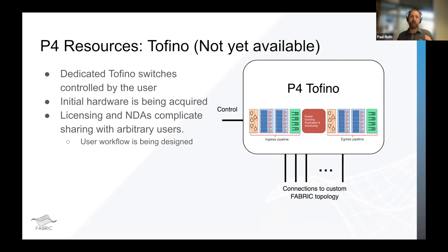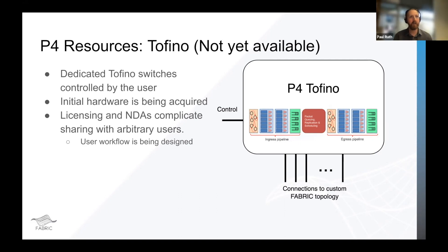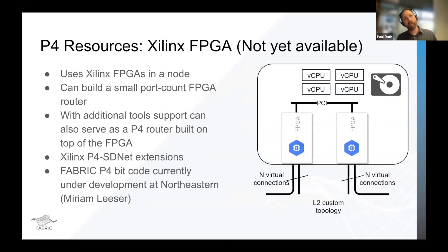Currently the initial Tofino hardware is being acquired. It's a little complicated because there's licensing and NDAs involved with Tofino and Intel, and sharing these proprietary resources is tricky — we're still working out the workflow. One challenge with Tofino is that you can't share the switch simultaneously with multiple users — we have to give the whole thing to one user at a time. As a way to provide more hardware P4 switches to users simultaneously and reduce cost, we're also going to have Xilinx FPGAs, which are also not yet available but can be used as a small port-count P4 switch.